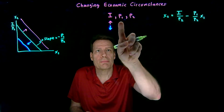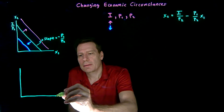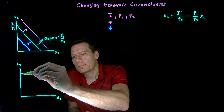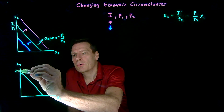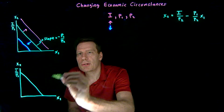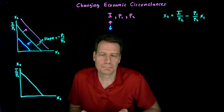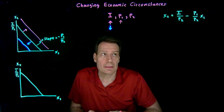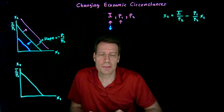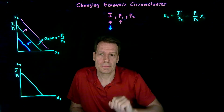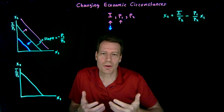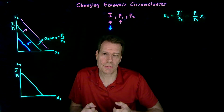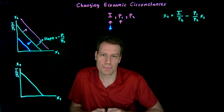That's the first kind of economic circumstance that could change. But we could also see changes in prices. Let's look at what a change in the price of good 1 would mean. We start with our original budget line: an intercept of income divided by p2 and a slope of minus p1 over p2. Now suppose the price of good 1 increases. We can see where p1 appears in the budget equation — it appears in only one place: the slope. That makes sense, since the slope is the opportunity cost of good 1 in terms of good 2. If the price of good 1 changes, that opportunity cost changes and thus the slope changes.